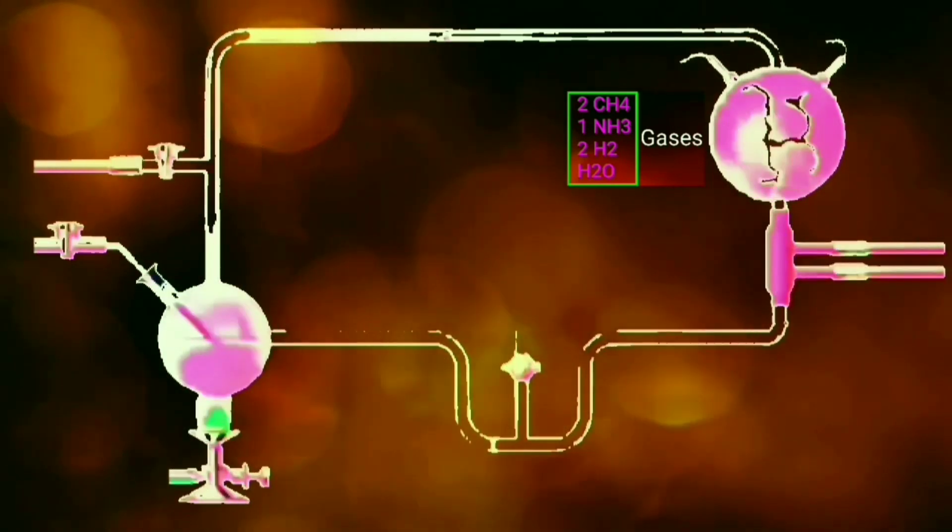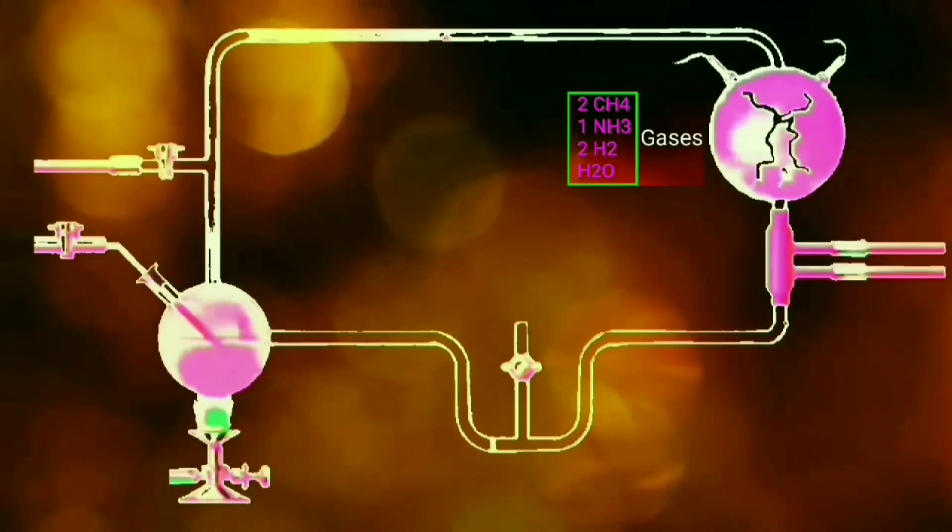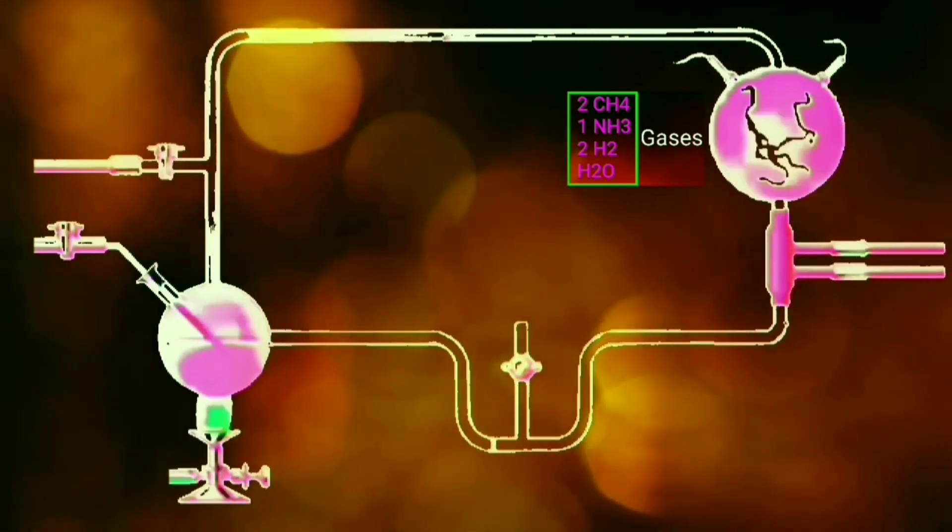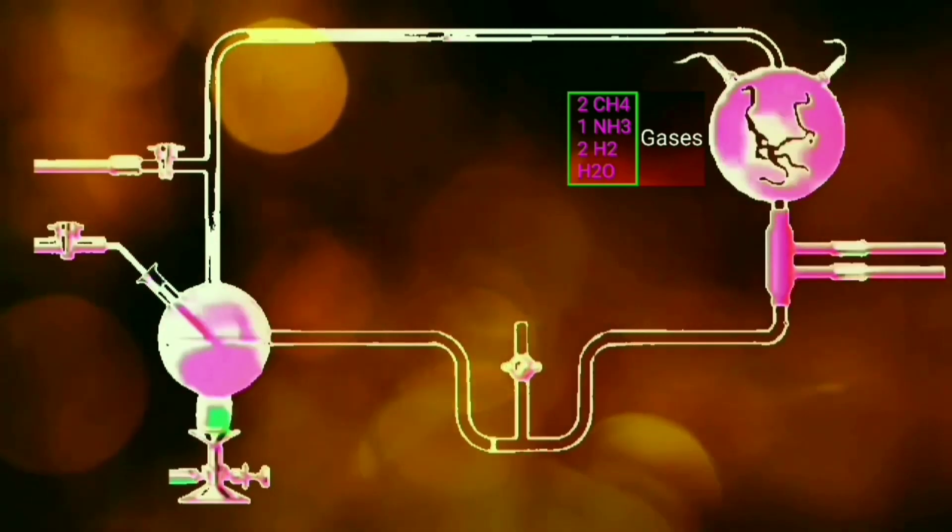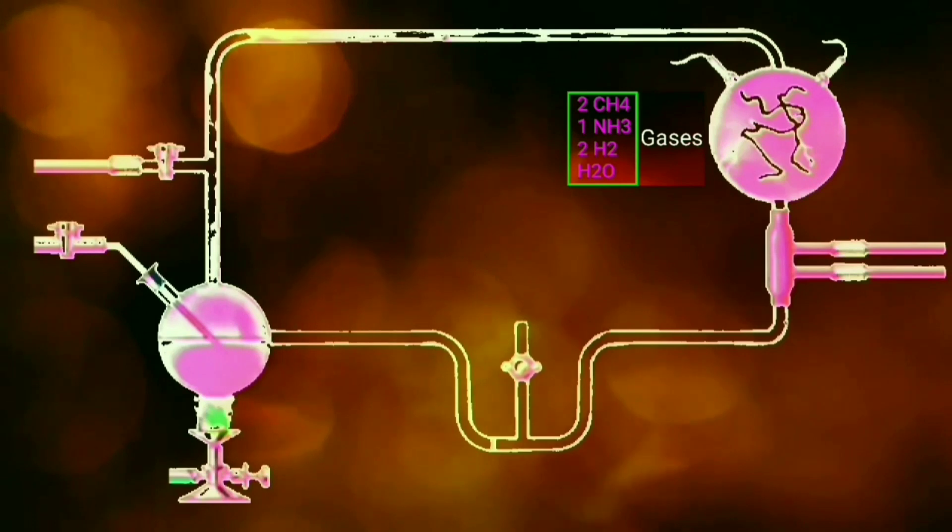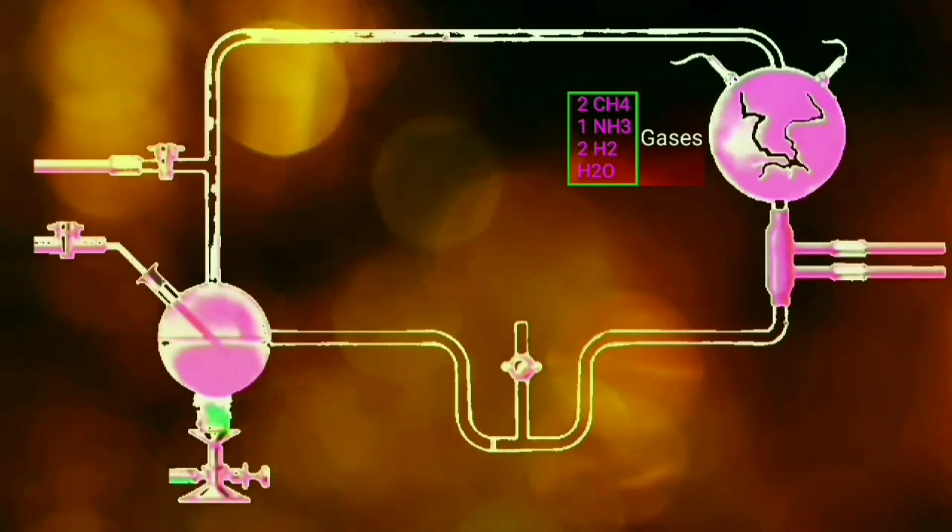He allowed the mixture to circulate in the closed glass apparatus for 18 days continuously and he provided energy in the form of spark by supplying electricity of 75,000 volts through two electrodes.